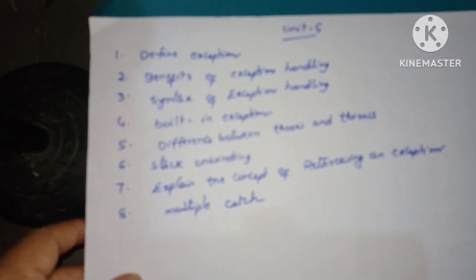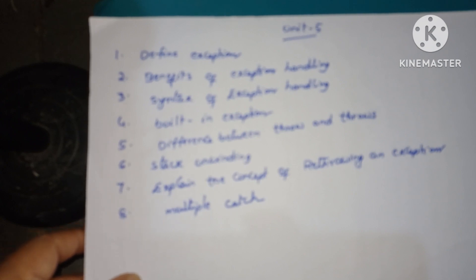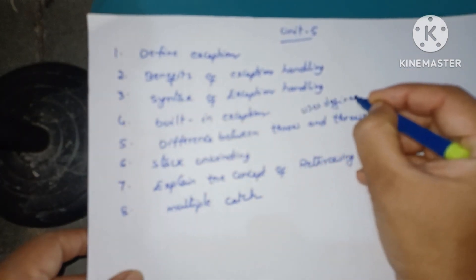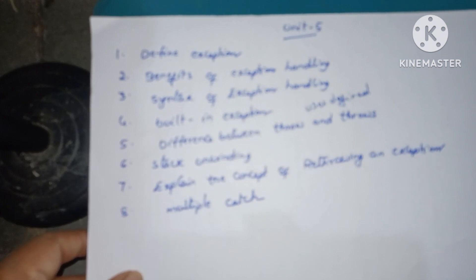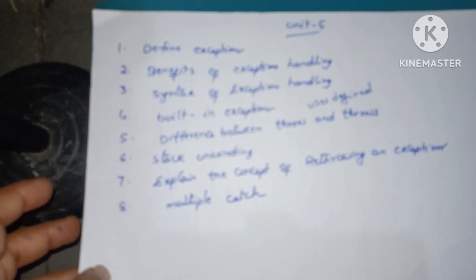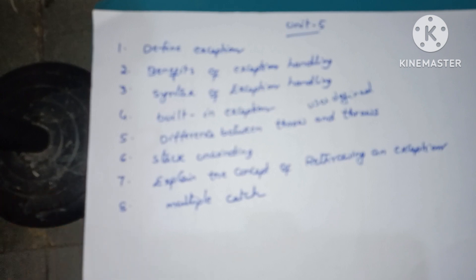Unit 5 important questions are: define exception. What is error? Benefits of exception handling, or the need of exception handling. Explain the syntax of exception handling like try-catch block. Give some built-in exceptions. How to define a user-defined exception and what is the syntax of user-defined exception? Difference between throw and throws. Explain about stack unwinding. Explain the concept of re-throwing an exception and write the multiple catch statement with syntax.